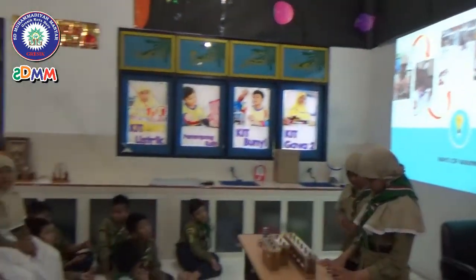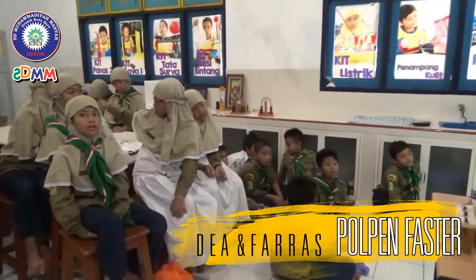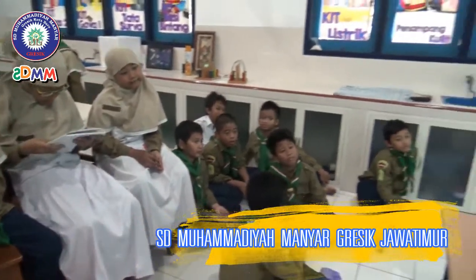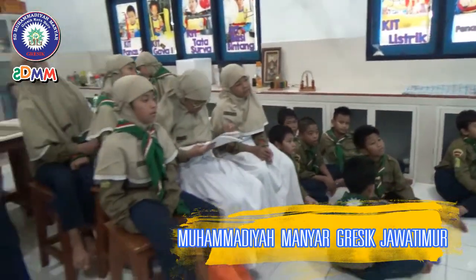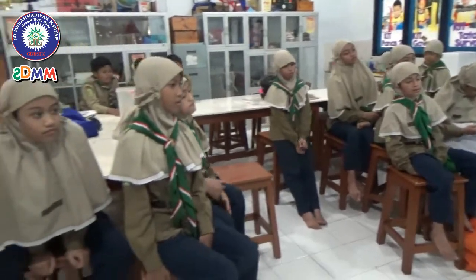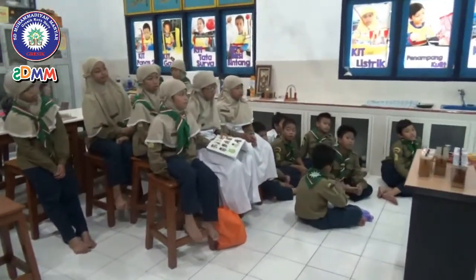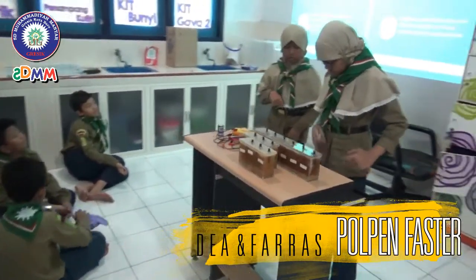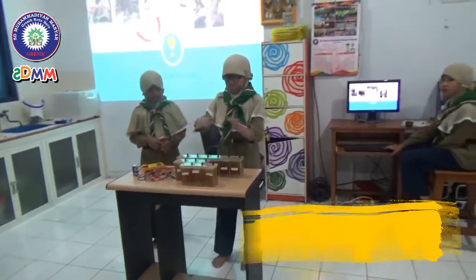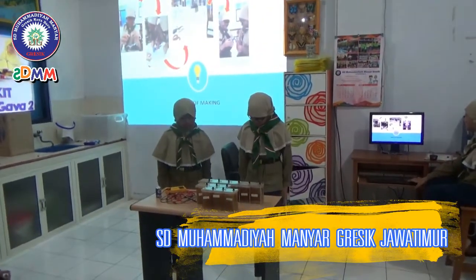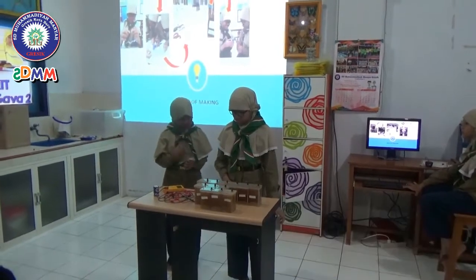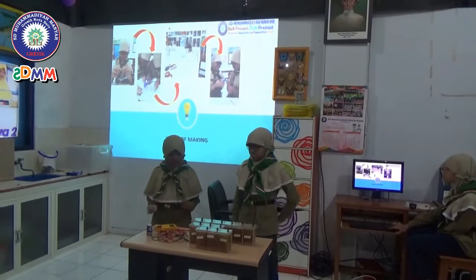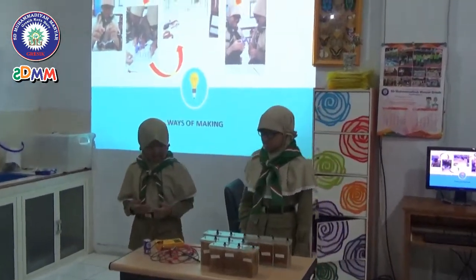The second step: set the anode from the pencil contents and connect it to the copper wire. The third step: set the cathode from carbon roots. The fourth step: connect the anode and cathode with wire. The fifth step: put waste water into the reactor. The sixth step: set wire to connect each cell in series. The seventh step: measure using an aquameter to determine the source of electrical energy.